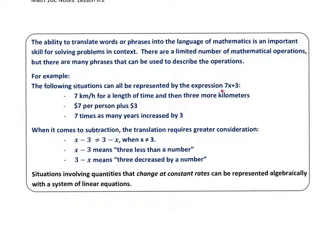all of the following situations can be represented by the expression 7x plus 3: 7 kilometers for a length of time and then 3 more kilometers, 7 dollars per person plus 3 dollars, or 7 times as many years increased by 3.